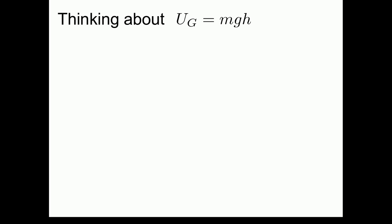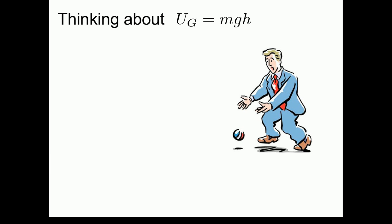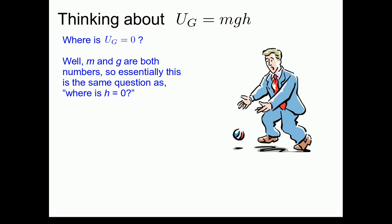Let's think about this quantity of gravitational potential energy written as mgh. Here we have Mr. Clumsy dropping a ball. Where is the gravitational potential energy of the ball equal to zero? Well, m and g are both numbers. m is the mass of the ball, and g is 9.8 meters per second squared. So essentially, this is the same question as, where is height equal to zero, h?